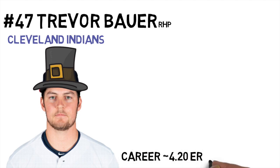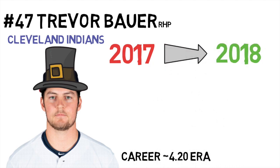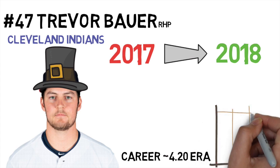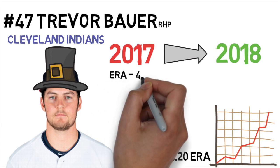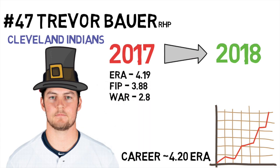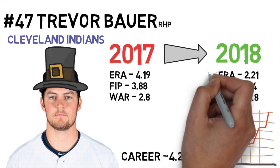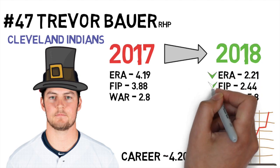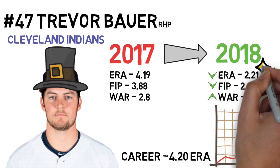Trevor Bauer was a pretty average pitcher prior to 2018, sporting a career ERA around 4.20. But then 2018 came and something changed. You saw videos of him working at Driveline during his offseason talking about pitch development, and not many people knew just how big this change was going to be for his career. Flash forward to 2018 and Bauer was an All-Star with wipeout stuff, ending the season with a lower ERA and FIP than most pitchers in the league, as well as the ninth best pitcher WAR in the league that year.